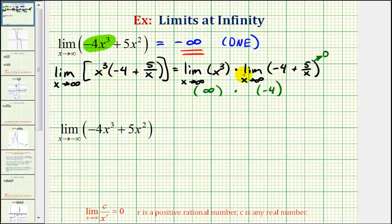We'll verify this graphically after we take a look at our second limit. Now we have the limit as x approaches negative infinity of the same polynomial function, negative four x cubed plus five x squared. Again, we are able to determine this limit just by considering the term with the highest degree, which again is this first term.